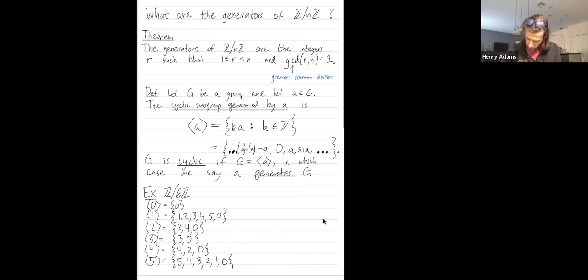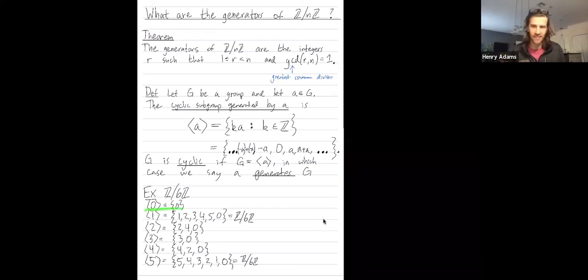So what are the elements that generate Z mod six Z? They're one and five. Because when I started this process with one, I generated every element in this group. And when I started with this process with five, I generated every element in this group. Zero only generates a single element itself. Two only generated the even elements. Three only generated three and zero. Four only generated the even elements. So the generators of Z mod six Z are one and five.